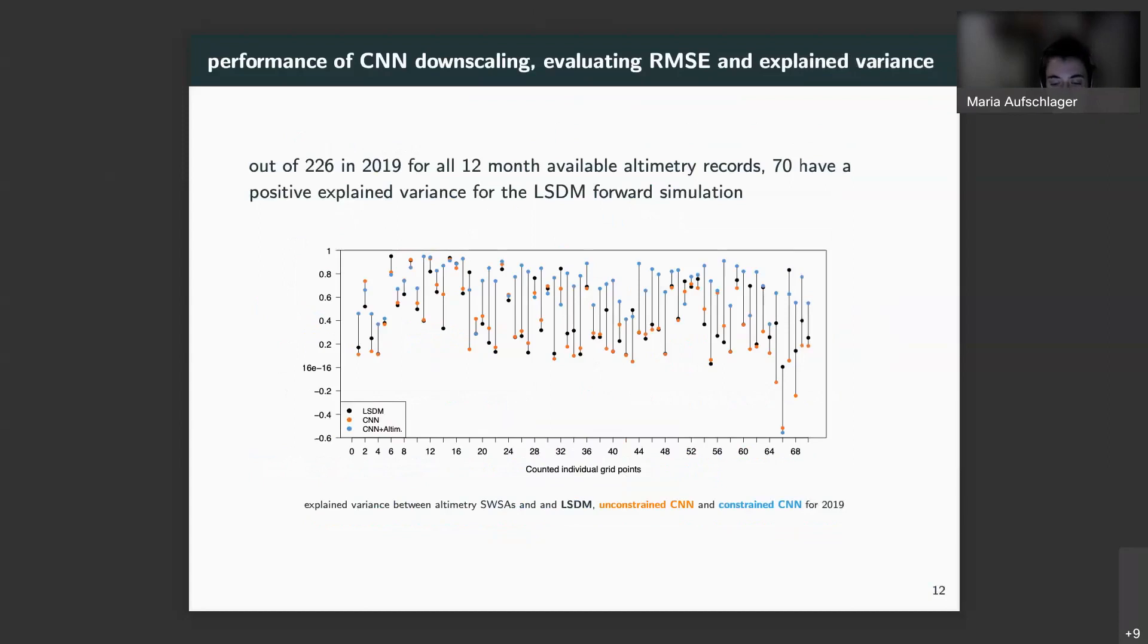Moreover, the performance of the neural network downscaling is evaluated by its ability to explain the variance of altimetry records in 2019. Here just grid points are considered that have a complete time series set of 2019 available, which are 226 out of which 70 had positive values and I show here. Again, in black the explained variance by the LSDM and orange by the unconstrained trained neural network and in blue the downscaling with constraint training. It's immediately visible that the highest values are kept by blue color, so by the constraint trained neural network. Meaning that the constraint trained convolutional network shows the best performance to explain the variance of altimetry observations.